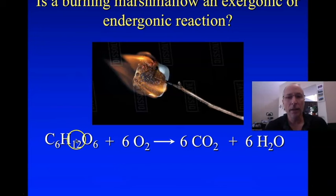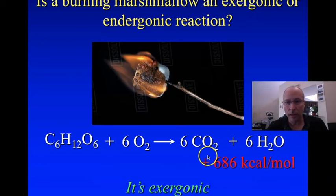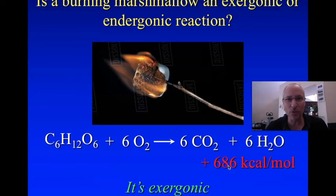During this reaction, you can tell it's spontaneous because when you pull the marshmallow out of the fire, it continues to burn. Therefore, it has a negative delta G — it is exergonic. Since it's spontaneous, spontaneity equals negative delta G, which equals an exergonic reaction. In fact, this is an exergonic reaction, and it releases a fair amount of energy: 686 kilocalories per mole of fructose. You start with a mole of fructose, you're going to get a lot of energy out of it. And that is why marshmallows taste so good to most people — it represents an enormous amount of energy.